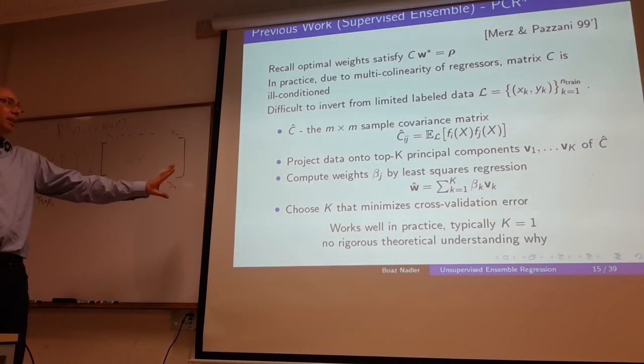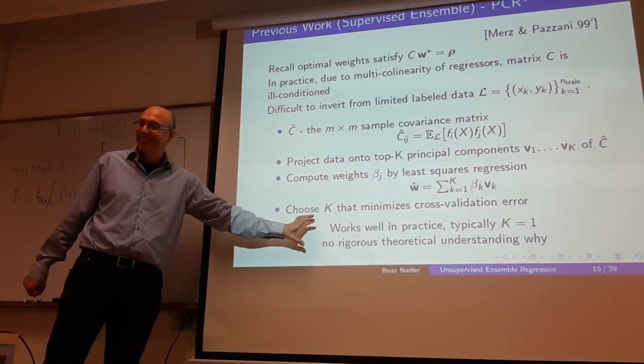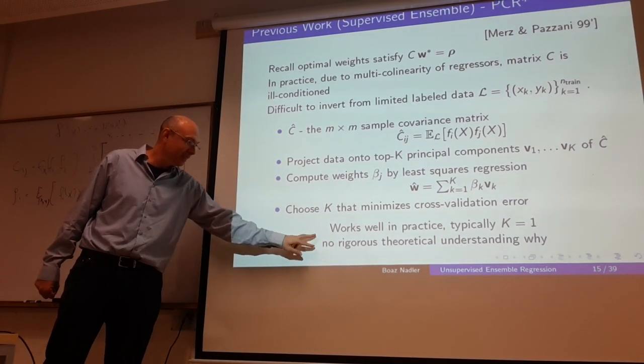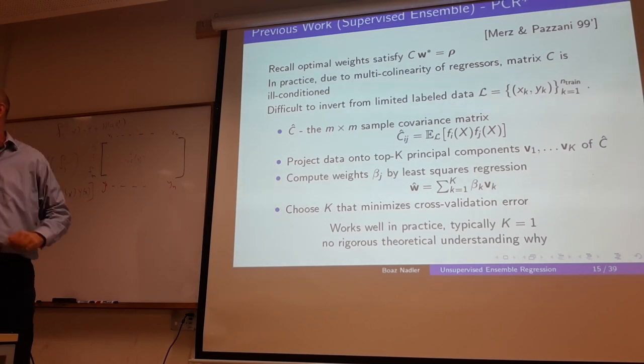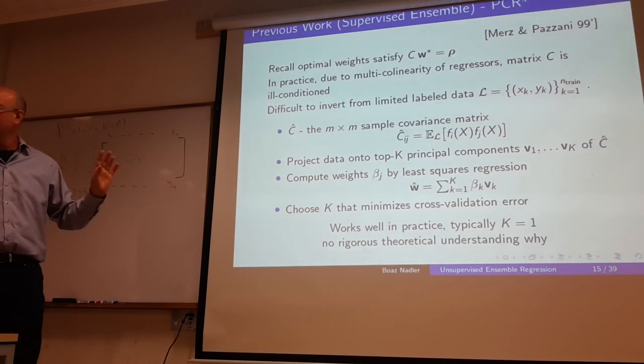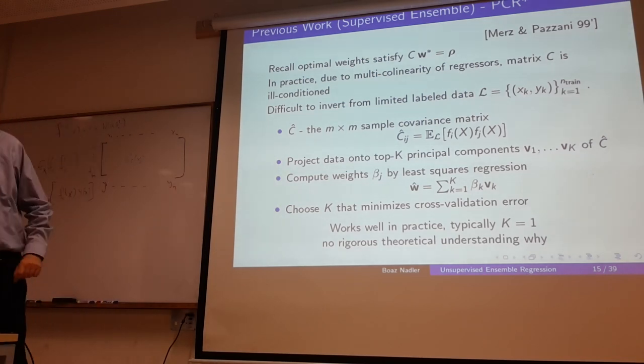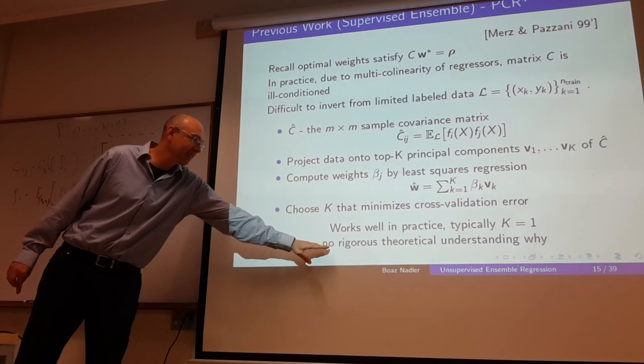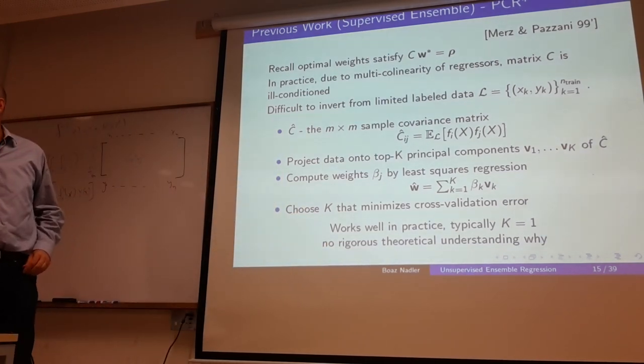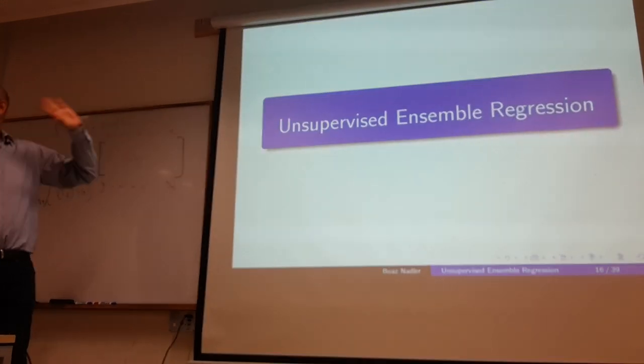Let me tell you a little bit about this work. Remember that the optimal weights satisfy this equation, CW star equals rho, C is the covariance between the regressors. Now, this matrix may be highly ill-conditioned, because different regressors may be quite strongly correlated, and trying to invert it may be quite an unstable operation. What Perrone and Pazzani proposed was, let's take our labeled data, it's a supervised scheme, let's compute the sample covariance from the labeled data, let's compute its leading eigenvectors, or principal components, and let's try to find a weight vector W, which is just a linear combination of the top capital K principal components, and we'll find the coefficients by least squares, because it's a supervised method. This overcomes this issue of ill-conditioning of the matrix C, you never invert it. And they proposed to choose K by cross-validation, and when we found out about this paper, we implemented it, and in a supervised scheme, it works pretty well in practice, and typically K is just one. Turns out that almost always you just take the first principal component, and that's enough, but there's no rigorous theoretical understanding why.